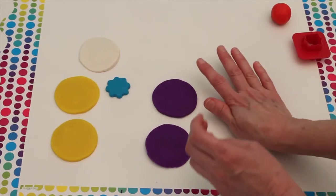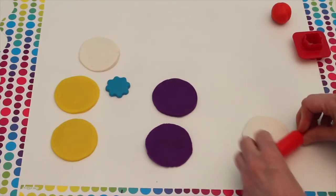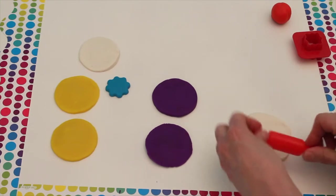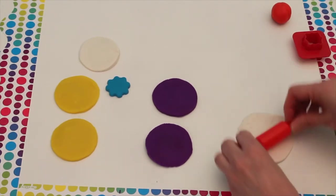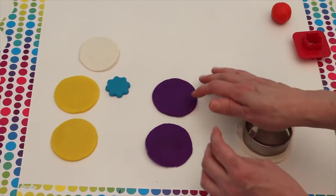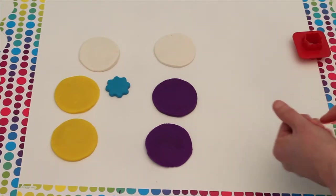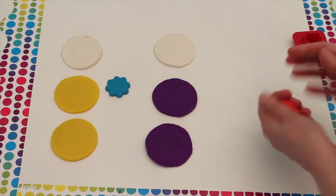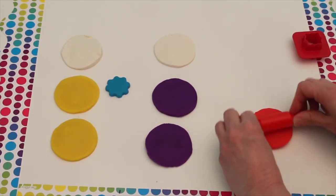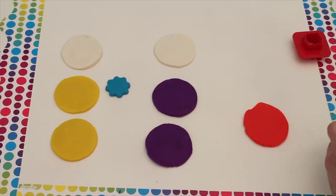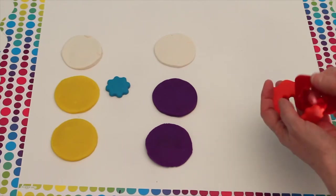Now we'll make a white circle again. So we have a white circle there. And then we'll take this red Play-Doh that's left and roll this out. And we're going to cut out another flower shape. There we go.